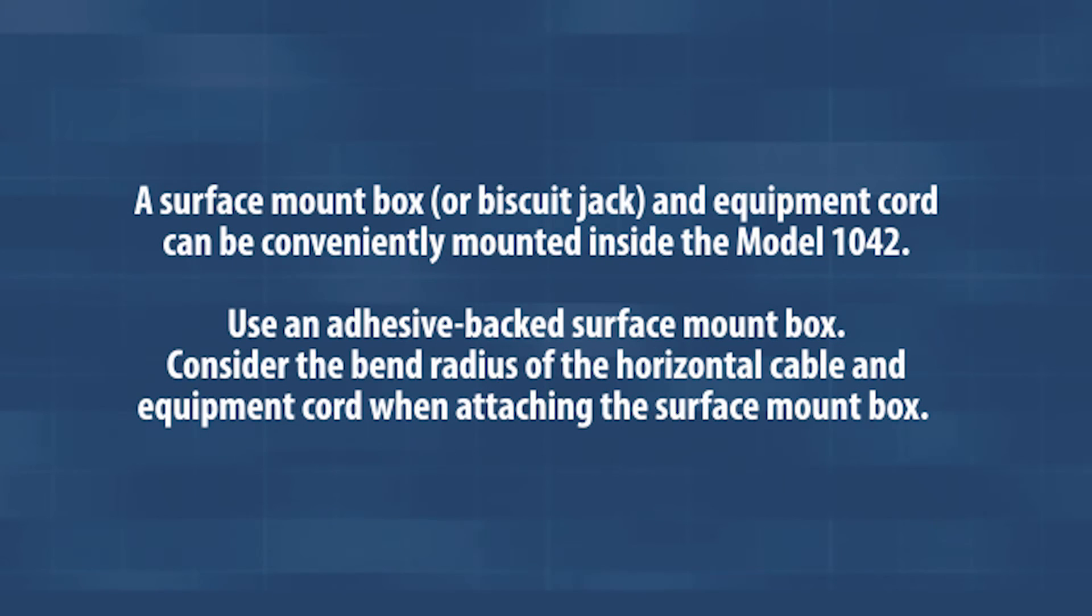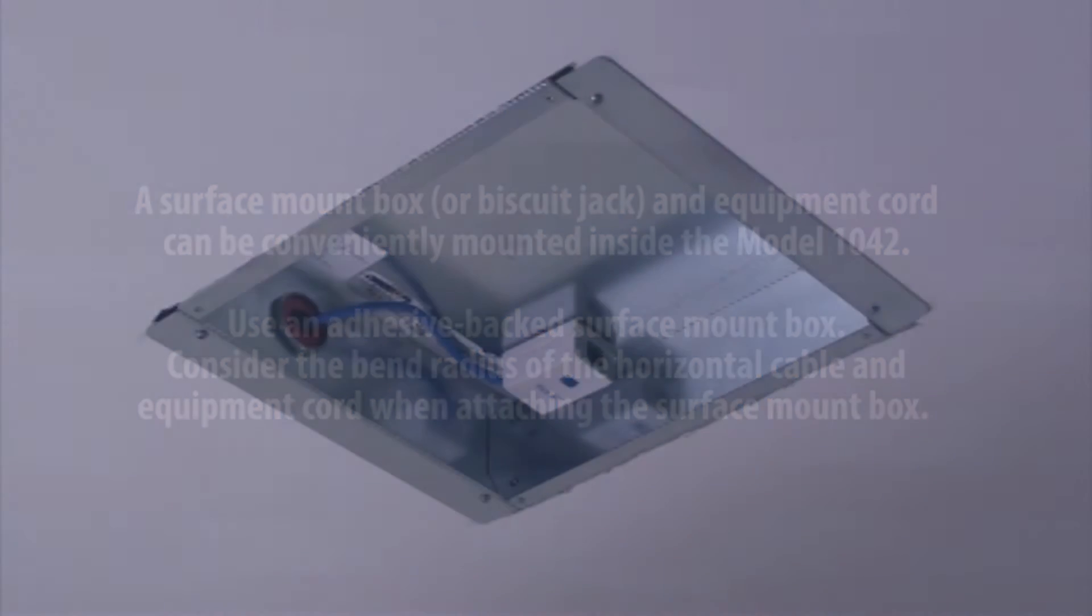Note that a surface mount box or biscuit jack and equipment cord can be conveniently mounted inside the Model 1042. Use an adhesive backed surface mount box. Consider the bend radius of the horizontal cable and equipment cord when attaching the surface mount box.